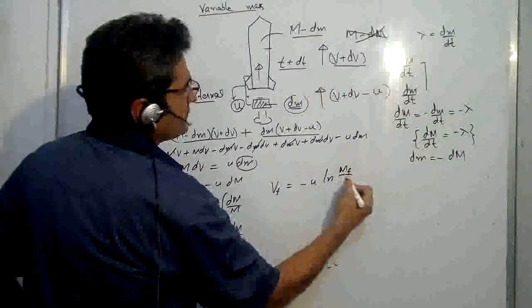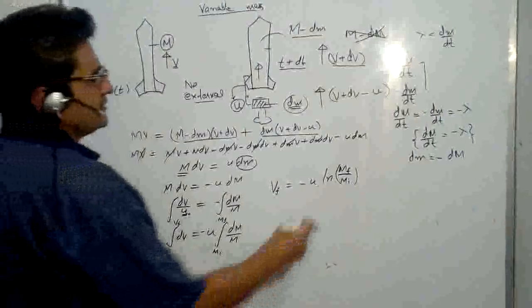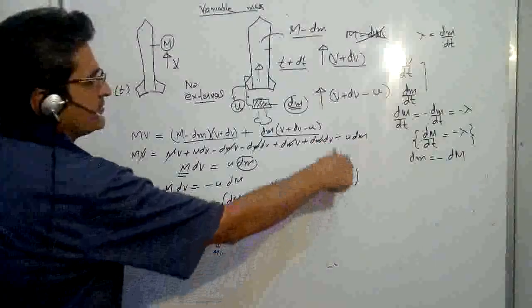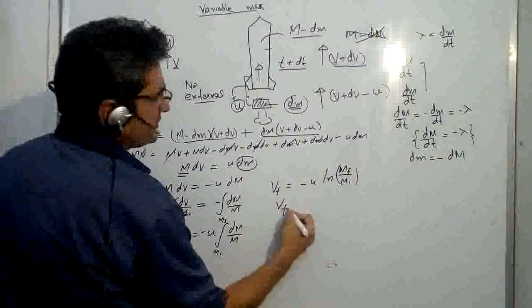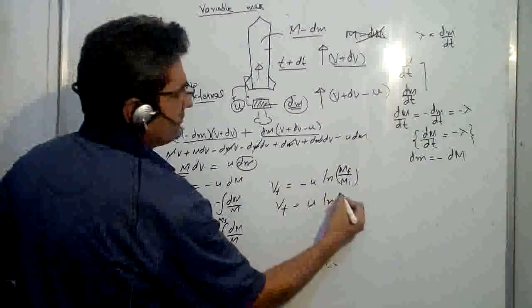So velocity final would be equal to minus u ln, log m final upon m initial. You can see the m final is always less than m initial, so it will be negative. And you can reverse it, you can write minus sign, you take it there, so u log m initial upon m final.